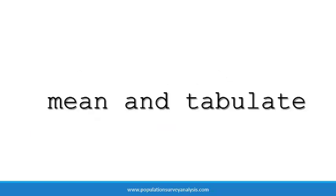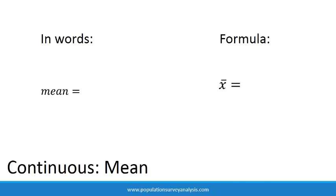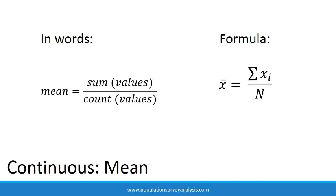The tabulate and mean commands are used for exploratory analysis, descriptive statistics, and when generating new variables. This lecture covers three descriptive statistics: means and medians, which are used to summarize continuous data, and percentages, which are used to summarize categorical data. The mean, or average, is calculated as the sum of values divided by the count of values. Means are used to describe variables that are normally distributed.